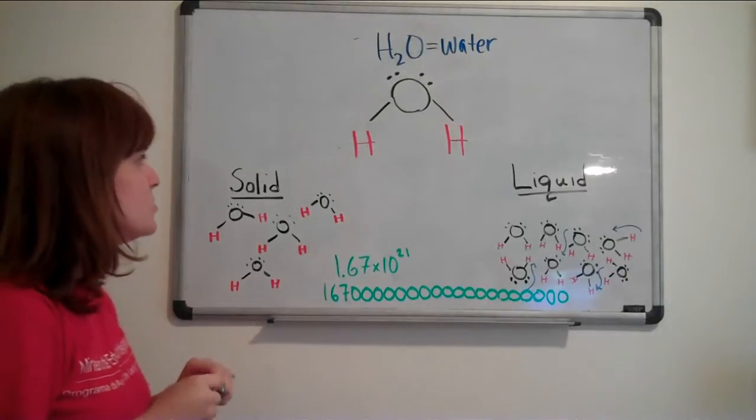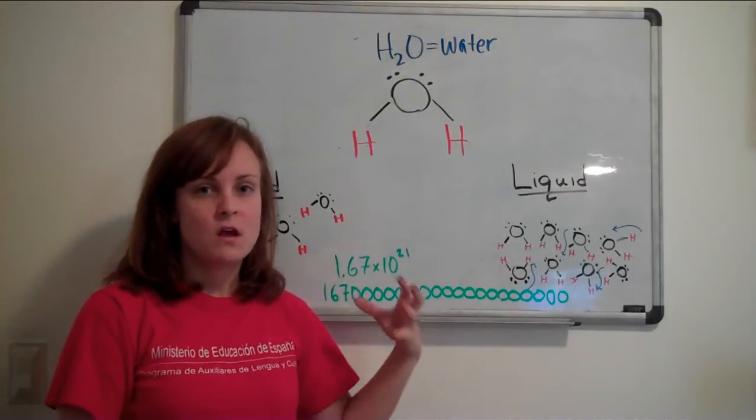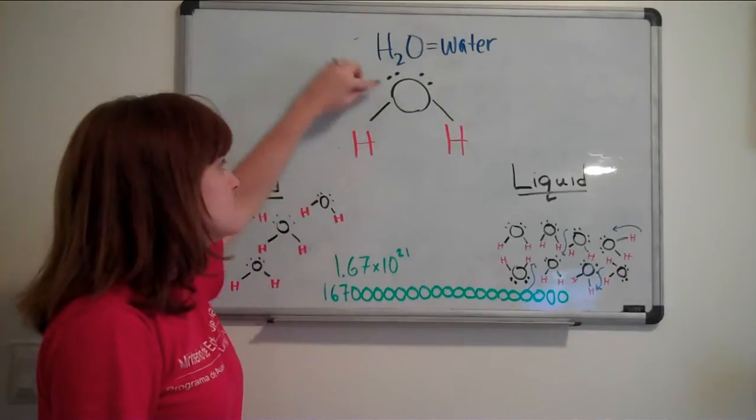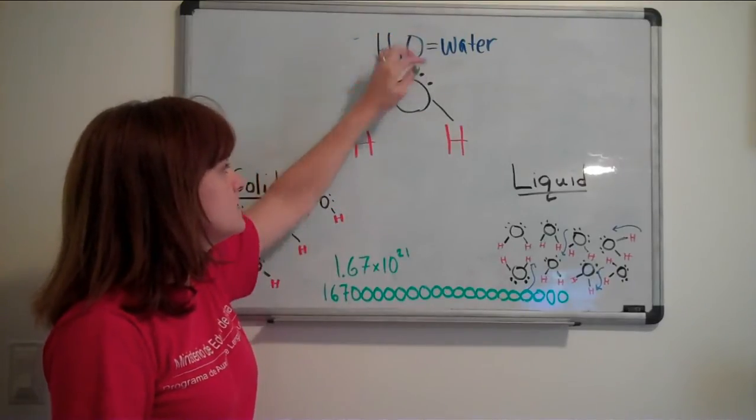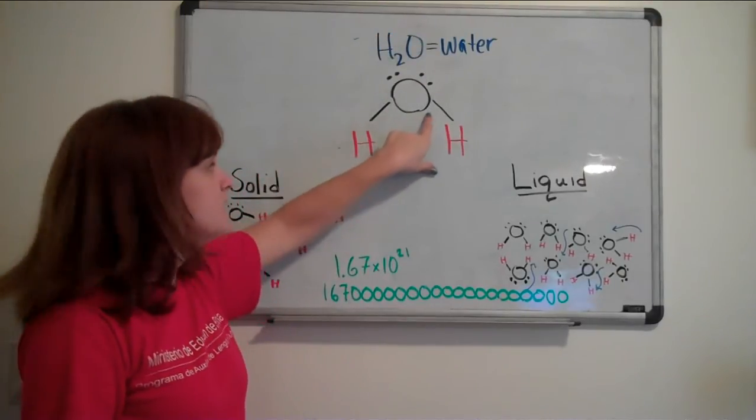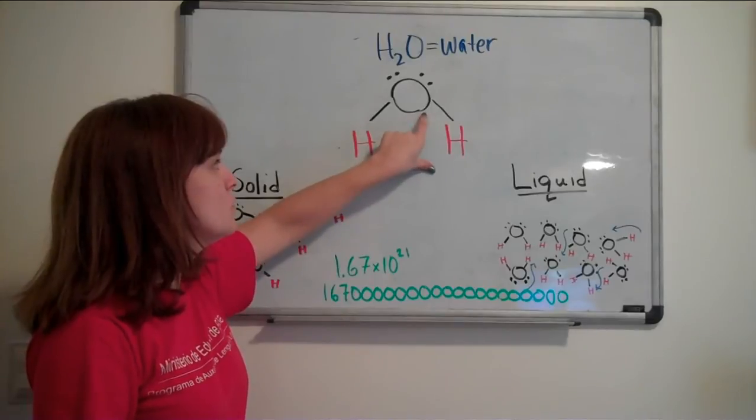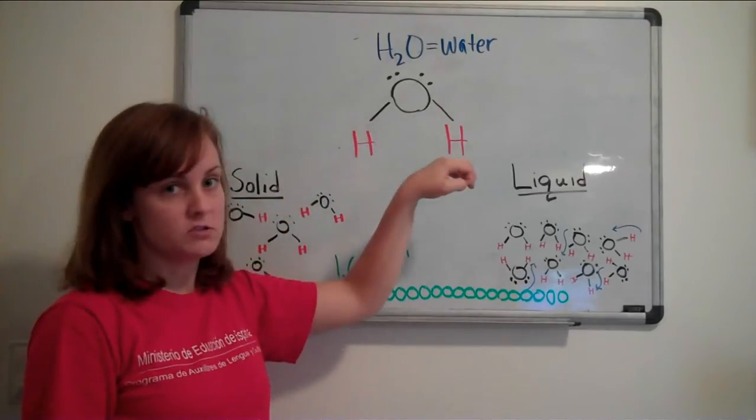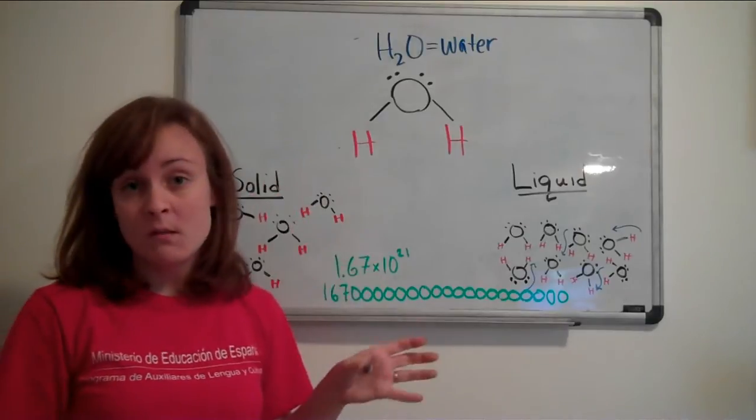A Lewis dot structure basically shows the arrangement of electrons around a molecule. And notice, these two dots are electrons, and this is a bond. Basically, it means that these two elements are sharing their electrons with each other. That part's not important.